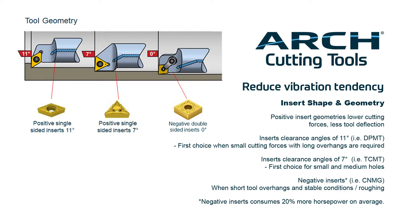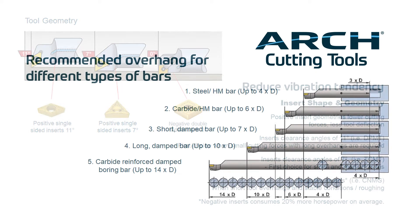For semi-finishing and roughing applications in short overhang setups, consider a negative style insert such as a CNMG. Keep in mind that negative style inserts can consume up to 20% more horsepower on average and significantly create more cutting forces compared to a more positive style insert, which significantly reduces the cutting forces being generated.